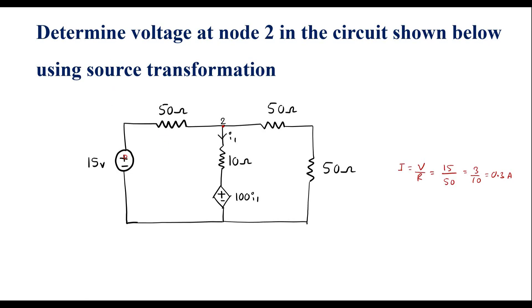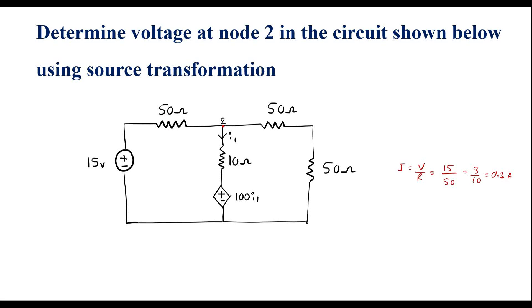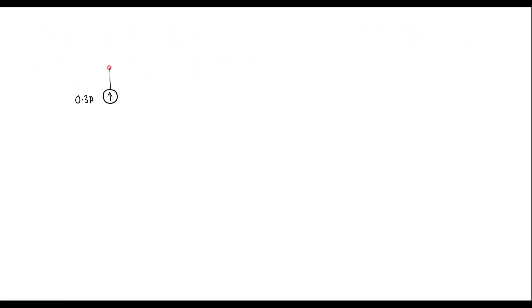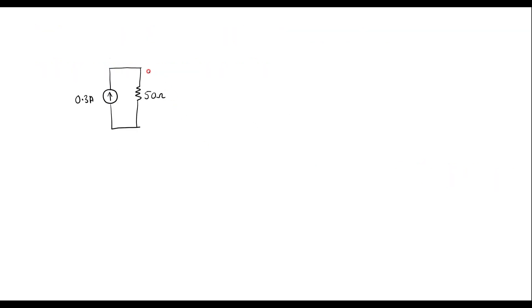This is the current source. At the plus terminal we connect the head end of the arrow, and at minus the tail end — that is 0.3 amps. Now the 50 ohm resistor is connected in parallel with this current source. We can also observe that the two 50 ohm resistors are in series, making 100 ohm, which is connected in parallel.